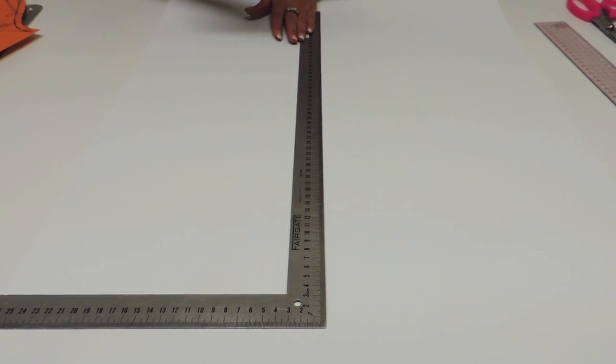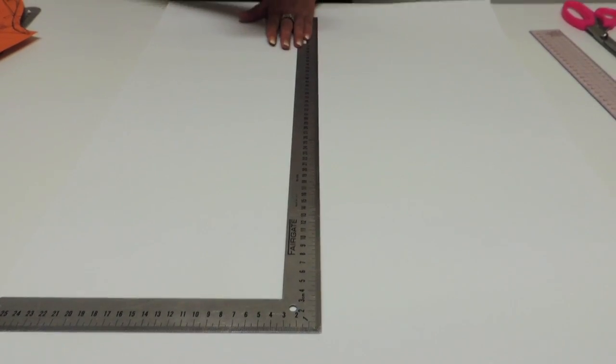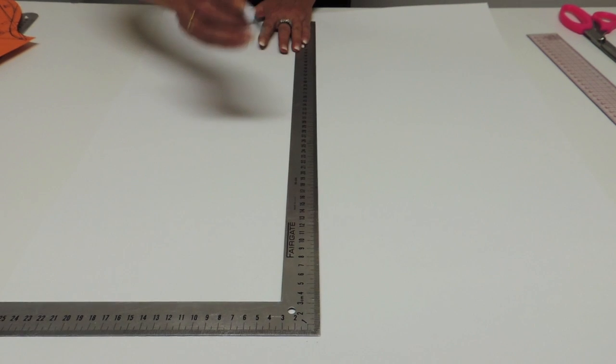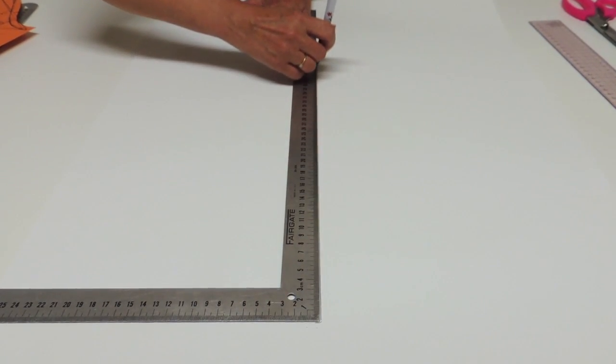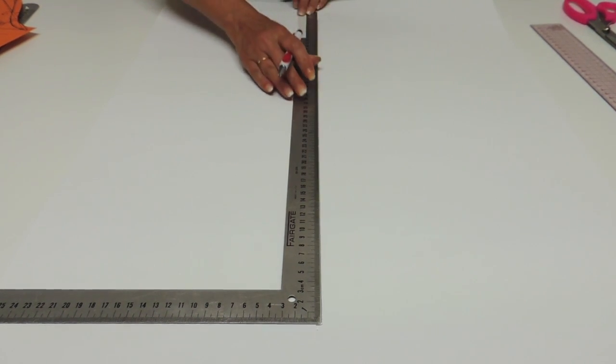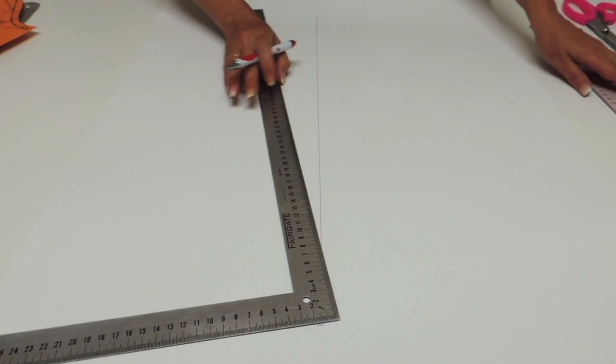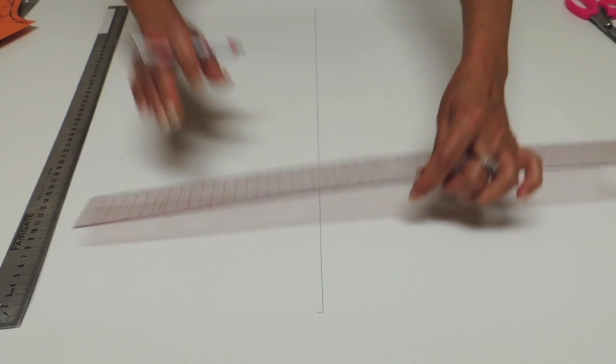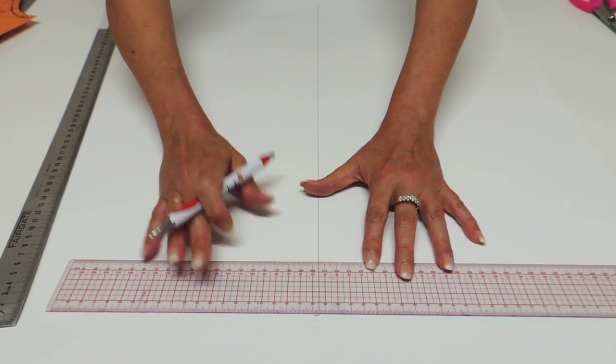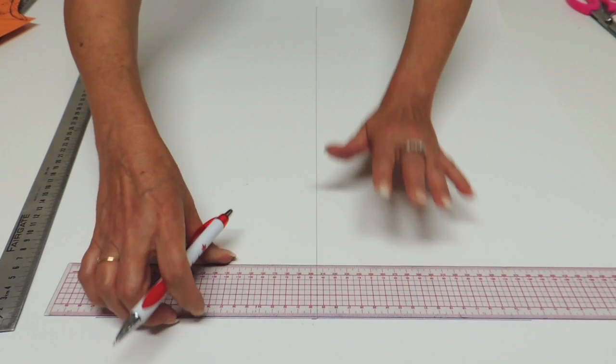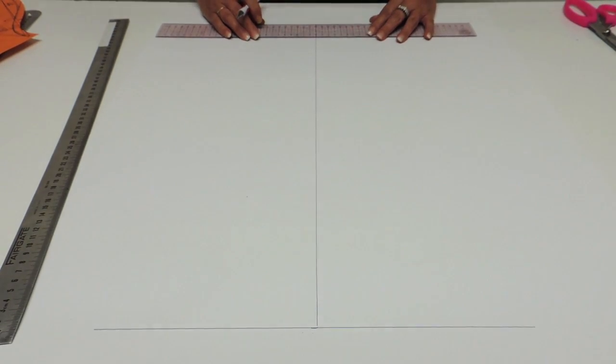The first construction line is going to be the center and the grainline of your sleeve. For my example it's 58 centimeters. And you're going to do square line at the bottom and on top.